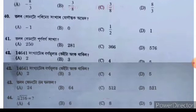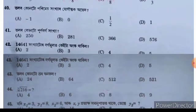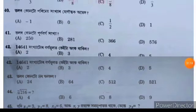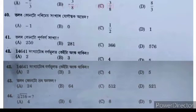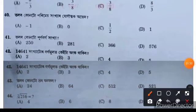For the next question, the options are: A is minus 1, B is 0, C is 1 by 2, and D is 1. The right answer is 0, which is option B. We should write that in the question.